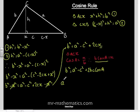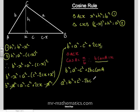Rearranging, we take B squared and C squared to the other side: A squared equals B squared plus C squared minus 2BC cos A. And that is the cosine rule.